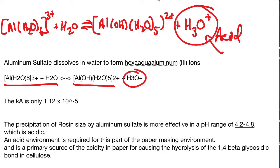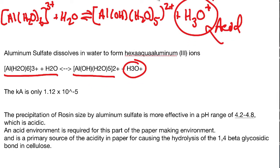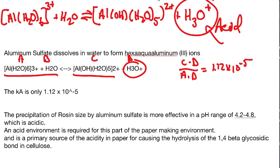The Ka for this reaction — if we call the reactants A and B and the products C and D — the ratio of C times D over A times B is only 1.2 × 10⁻⁵, which means that only about one in a hundred thousand of these will actually form an acid. This reaction only happens about one in a hundred thousand times to the right; most of the time it's going to the left, so there's very little acid produced.